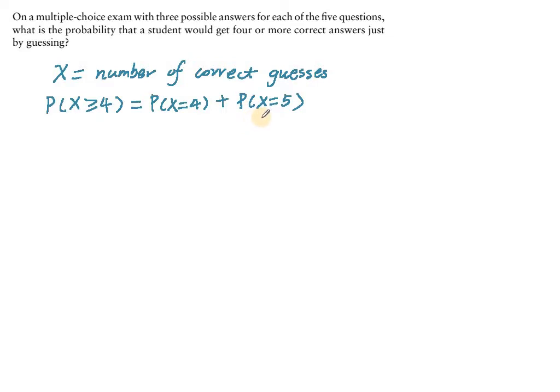So let's look at the easy one. Probability that X equals five, that would be basically guessing the correct answer five times in a row. And there's only really one way of getting there. So 1 over 243.